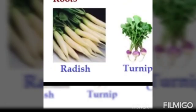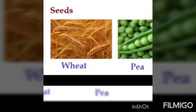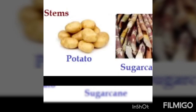Roots — for example, radish, turmeric, and carrot. Next, we will see seeds — wheat, pea, and rice. All these are seeds. Next, stems — potato and sugarcane. All these are examples of stems.